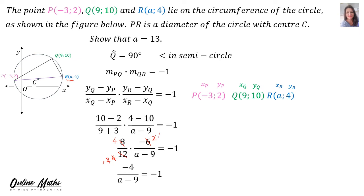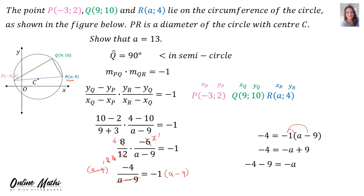To solve, we multiply both sides by (A - 9): -4 = -1 × (A - 9), so -4 = -A + 9. Rearranging: -4 - 9 = -A, giving -13 = -A. Dividing by -1: A = 13.